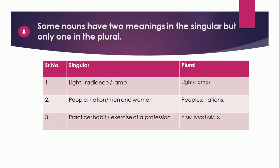Point 8: Some nouns have two meanings in the singular but only one in the plural. For example: 'light' in singular means radiance or lamp, while the plural 'lights' means only lamps. 'People' in singular means nation or man and woman, while the plural 'peoples' means nations. 'Practice' in singular means habit or exercise of a profession, while the plural 'practices' means only habits.